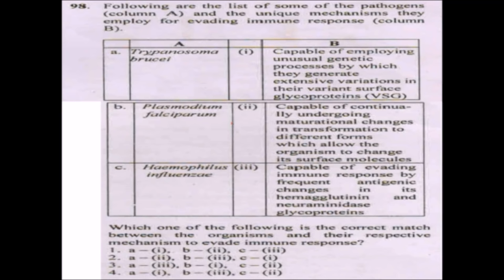The next question lists pathogens in column A and their unique mechanisms for evading immune responses in column B. The answer is option 1. Trypanosoma brucei employs unusual genetic processes to generate extensive variations in their variant surface glycoproteins (VSGs). Plasmodium falciparum continually undergoes transformation to different forms, changing its surface molecules. Haemophilus influenzae evades immune responses by frequent antigenic changes in its hemagglutinin and neuraminidase glycoproteins.